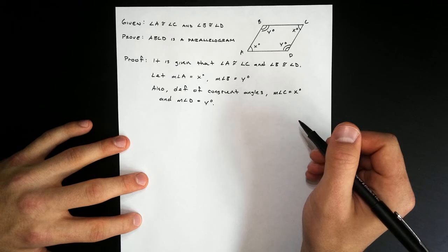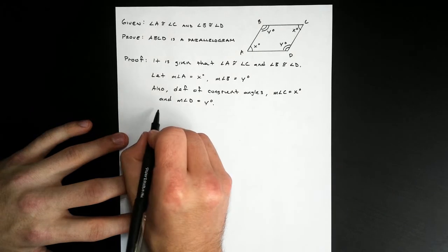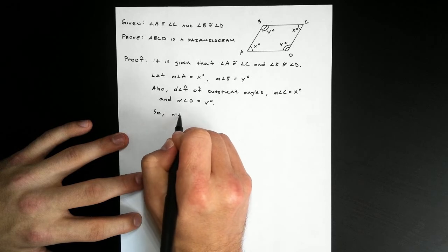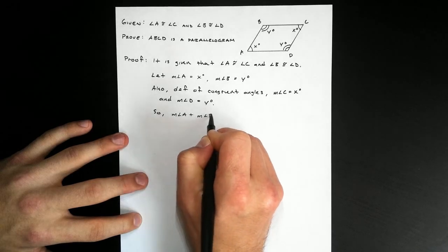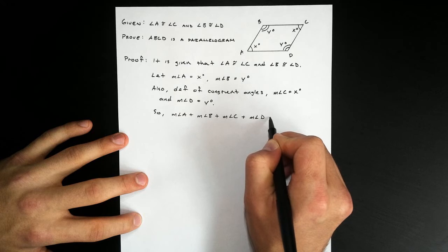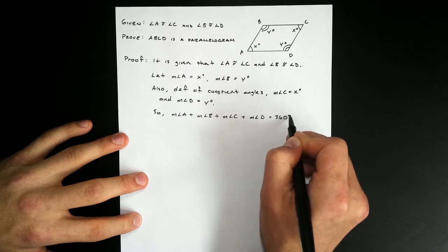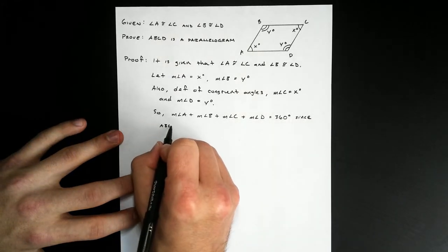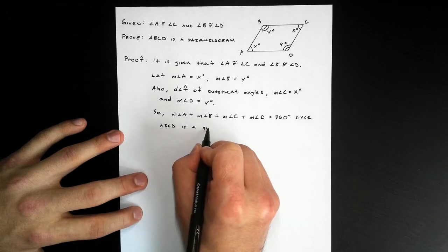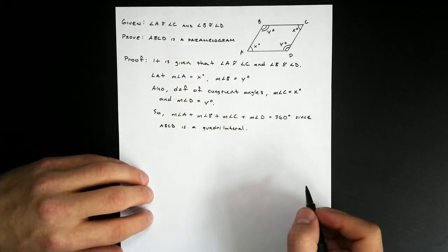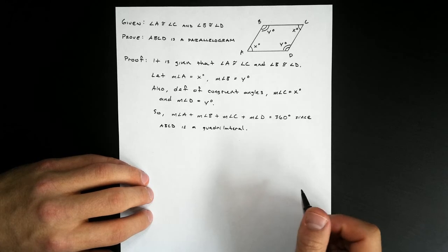The reason I'm assigning variables here is because I want to write an equation that represents all of the angles. Because this is a quadrilateral, I know that the sum of the interior angles has to be 360 degrees. So I can write that the measure of angle A, plus the measure of angle B, plus the measure of angle C, plus the measure of angle D equals 360. That's because ABCD is a quadrilateral — this was a corollary to the polygon interior angles theorem that we saw previously.